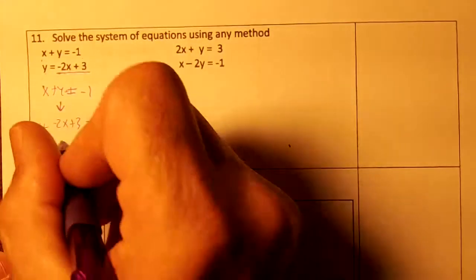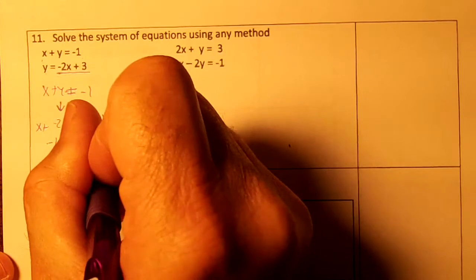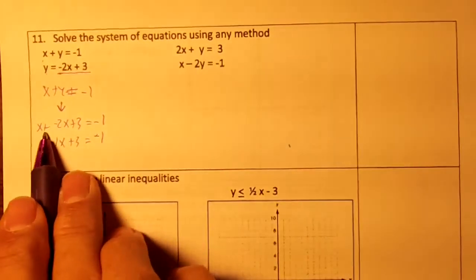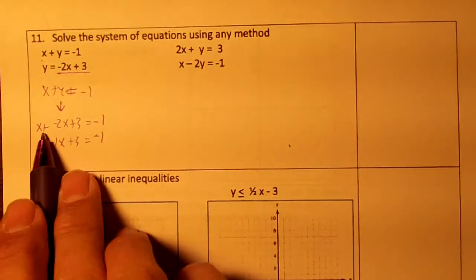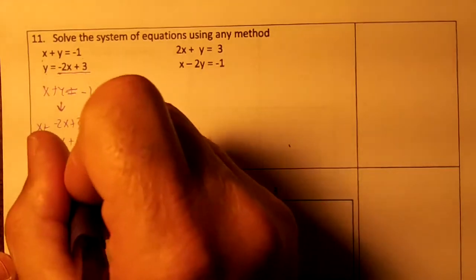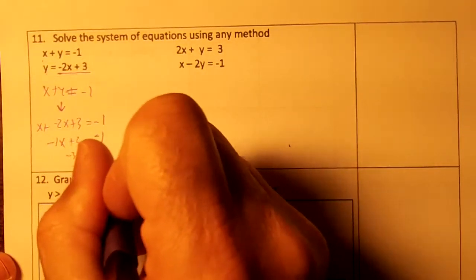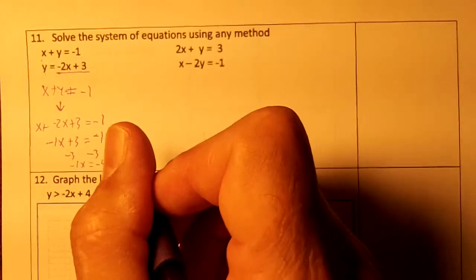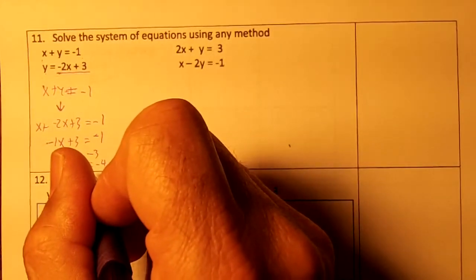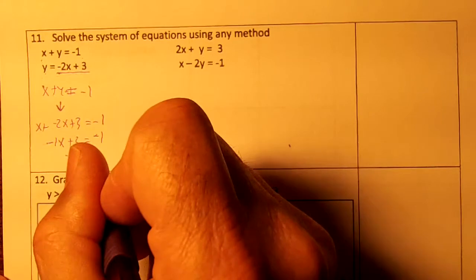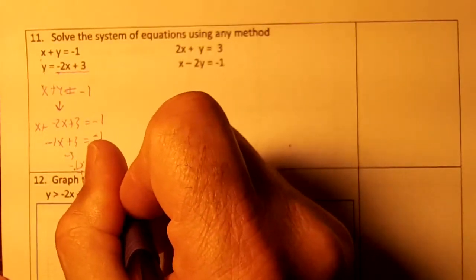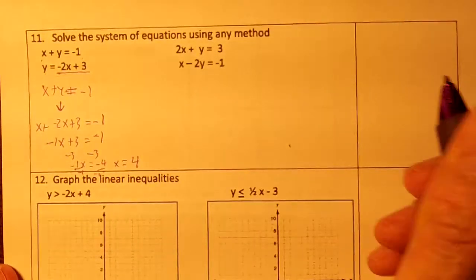1x minus 2x is negative x, so I've combined my x's. Notice after we substitute, we only have one variable in the equation. Then subtract the 3, so negative 1x equals negative 4. The next step is to divide by negative 1, so x would be positive 4.